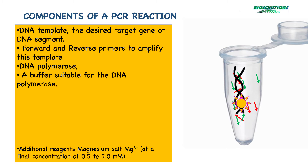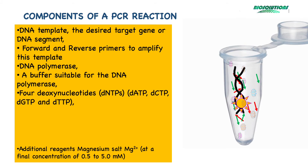The buffer usually contains a magnesium salt like magnesium chloride to provide magnesium ions as a cofactor at a concentration of around 0.5–2.5 millimolar. Next, we add a mixture of 4 dNTPs which help in creating new DNA strands by providing the building material. We use sterile water to make up the volume and to dilute the buffer.